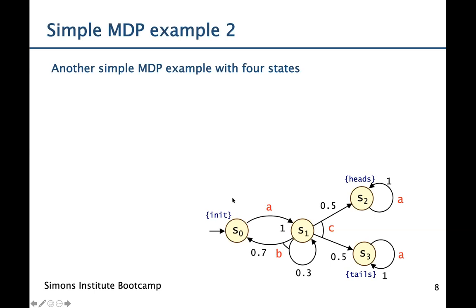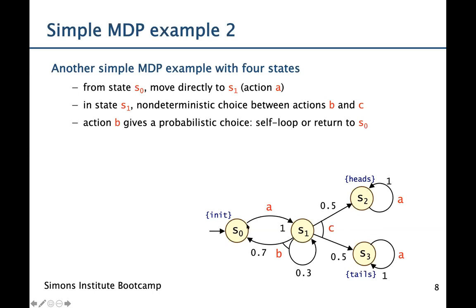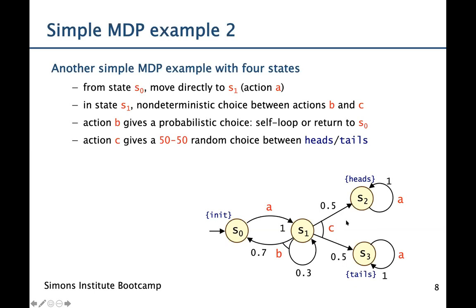Let's look at one other simple example with four states. From S0 we have no choice — the only available action is A, so we move to S1. In S1 we have a non-deterministic choice between two available actions B and C. If we choose action B, we either return to S0 with probability 0.7 or there is a self-loop with probability 0.3. If we choose action C, there's a 50-50 random choice between moving to state S2, corresponding to heads, or S3, corresponding to tails.